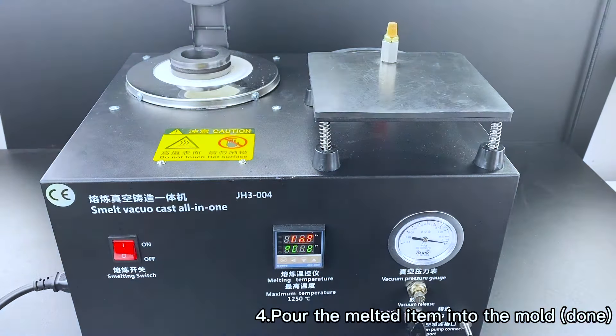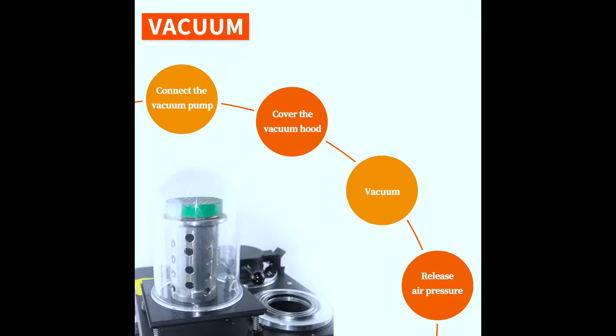4. Pour the melted item into the mold. PV: current temperature, SV: maximum temperature.